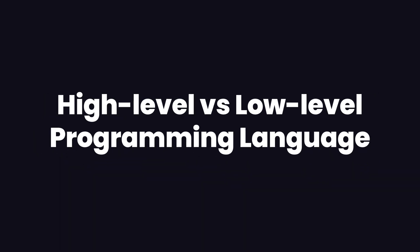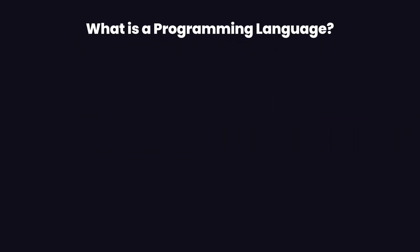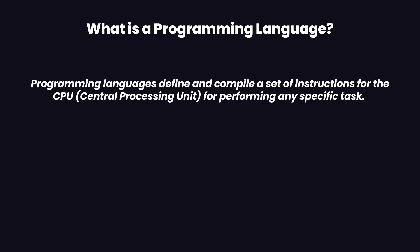In this video we are going to talk about the main differences between the high level languages and the low level programming languages. Before moving on to this comparison, we want to discuss what a programming language is. A programming language is a set of instructions that we send to the computer to perform a specific task.